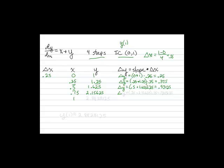We've completed three steps, so we have one more to go. We add together our x and y values — 0.75 plus 2.15625 — then multiply by 0.25, giving us a delta y of 0.7265625. Adding that to our old y value of 2.15625, we get 2.8828125.